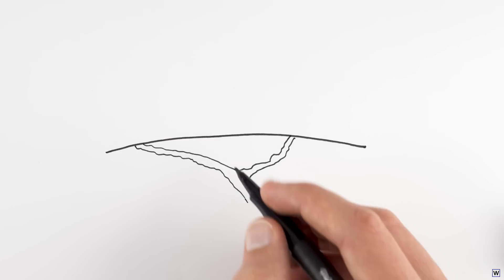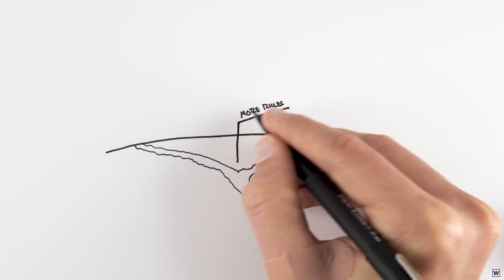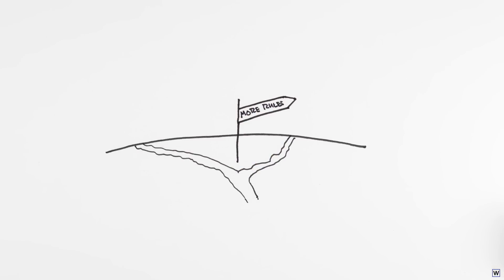Last time, we left off with an important question. Should we continue manually programming rules to identify fingers, or should we try something else?